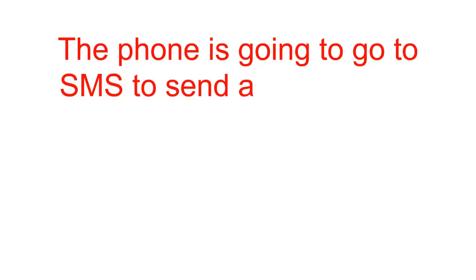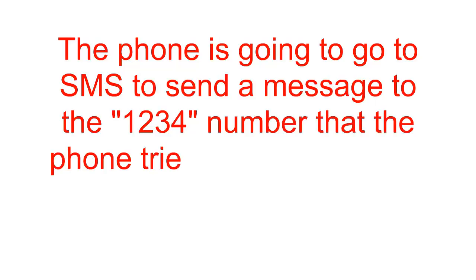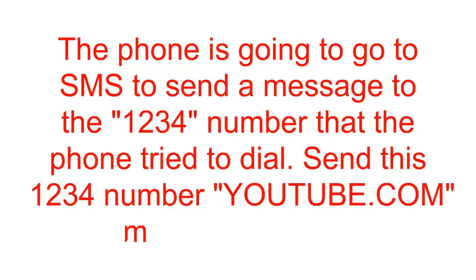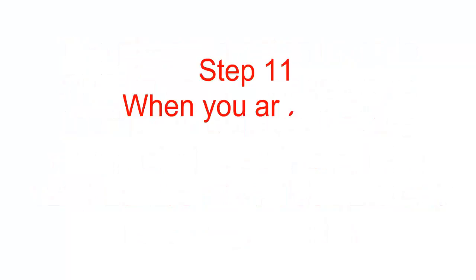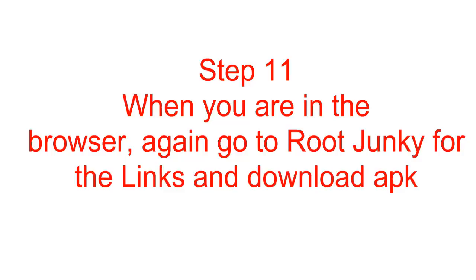Step 10. When the dialer shows up, end the call and immediately click on the message button. The phone is going to go to SMS to send a message to the 1234 number that the phone tried to dial. Send this message to the 1234 number with the text 'youtube.com'. After the message is sent, the word youtube.com will become a blue internet link. Click on it. The browser will go to YouTube. Once you are in YouTube, click on the three dots at the upper right-hand side of the screen, click on Settings, then About, then Google Privacy Policy. The phone will ask you to choose an internet browser — use the Internet browser.